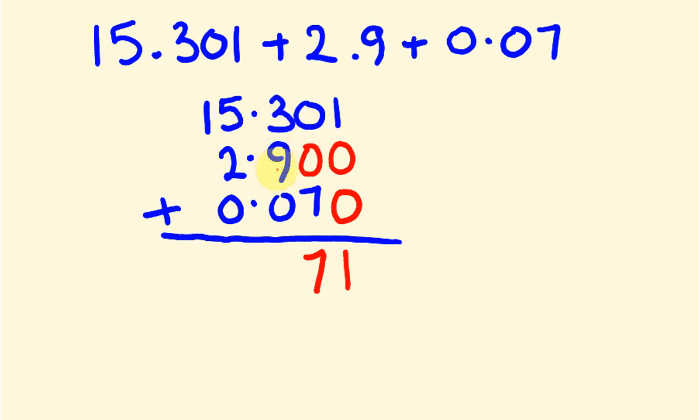Now looking at the tenths: three plus nine is 12, so I'm going to put the two down and the ten part I'm going to carry over here as a one.